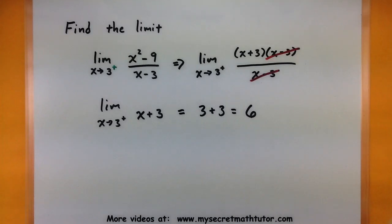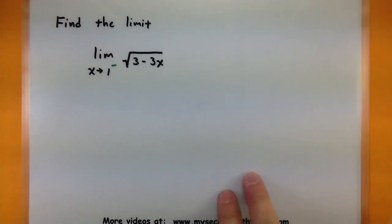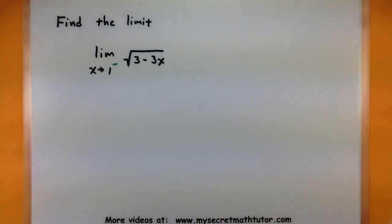Let's go ahead and take a look at another one. In this one, we want to figure out what is the limit as x approaches 1 from the left of the square root of 3 minus 3x. Now this one, it's really important that we're actually handling this using a one-sided limit because if we tried to approach it from the other side, the right side, it actually would not work. Let me give you a sense of why that's happening.